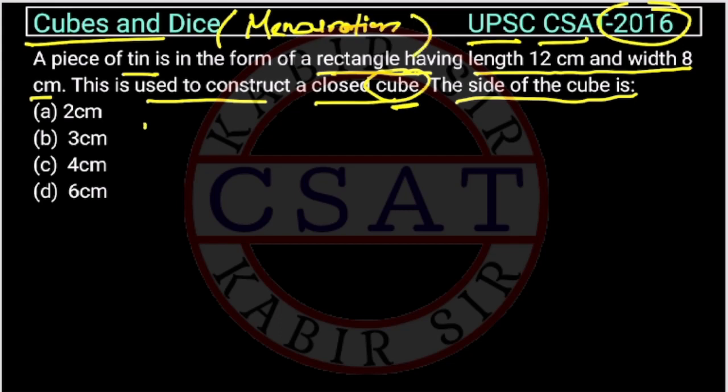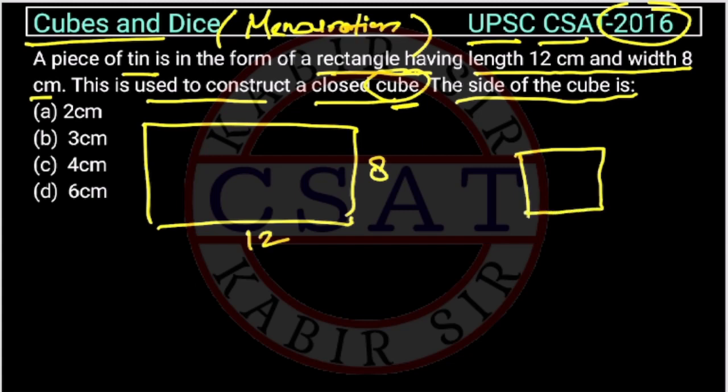So, there is a piece of tin, like this. This is 12 centimeter and 8 centimeter. From this, they have made a cube like this. So, they are asking what will be the size, size of this side.